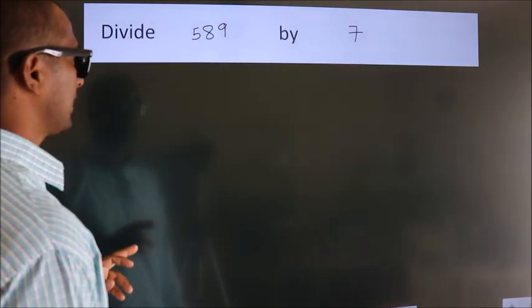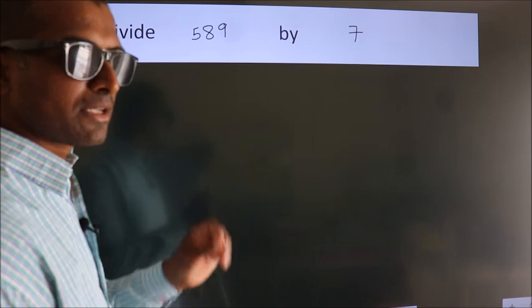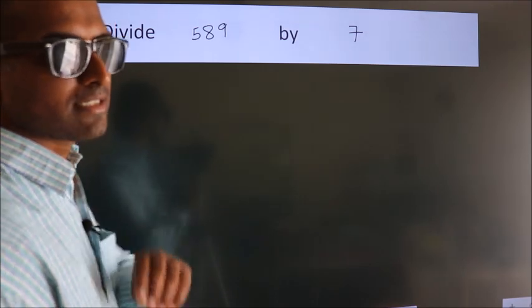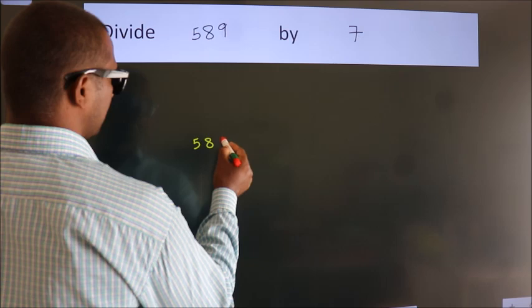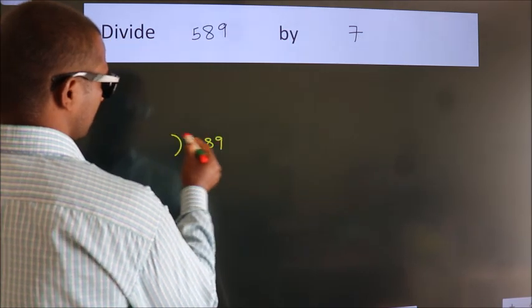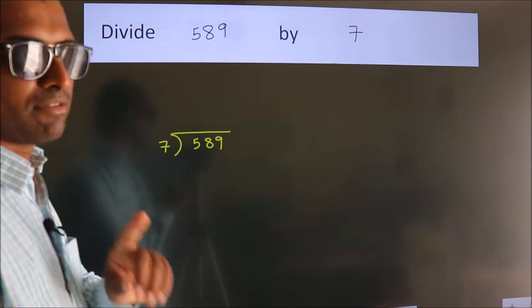Divide 589 by 7. To do this division, we should frame it this way: 589 here, 7 here. This is your step 1.